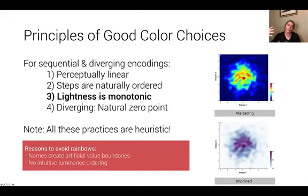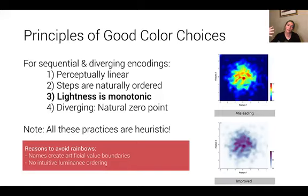Another core property of effective color use for numeric data is that we want encodings where our lightness varies monotonically. As our values get higher, lightness should change systematically — on a white background we want colors to get darker as values get higher. This is one of the reasons that the rainbow is something you should avoid when encoding numeric data. It seems bright, pretty, and engaging, but the rainbow has a number of perceptual failures that cause people to significantly distort values in their data.